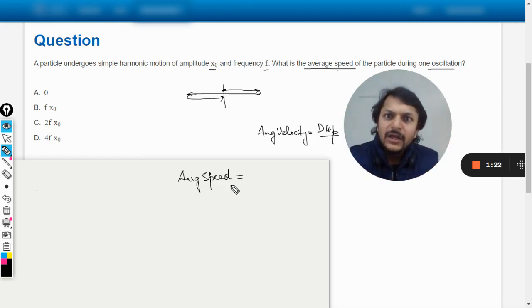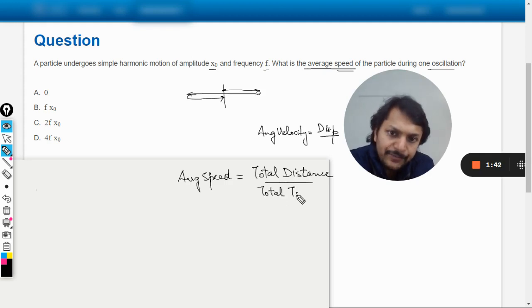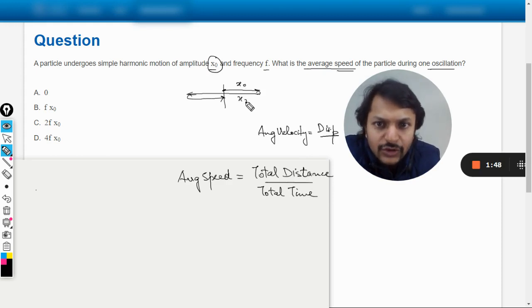The first thing is, there is no direct formula - you have to complete the problem by itself. So there is no direct relation anywhere. Average speed is given by total distance divided by total time. Now, what is the total distance? Amplitude is given as x_0 - x_0 here, x_0 here, and x_0 here.